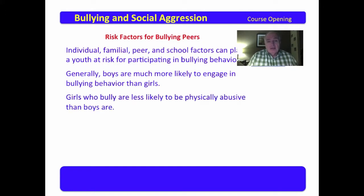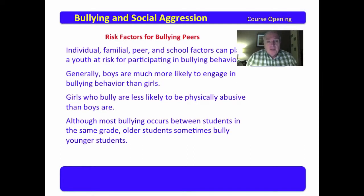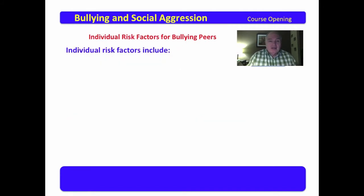When girls bully, it may be direct bullying — taunting, name-calling — or indirect bullying with social isolation. Although most bullying occurs between students in the same grade, older students sometimes bully younger students. This applies in school settings, church settings, and home settings. In fact, sometimes the younger will bully the older. All sorts of things can happen.